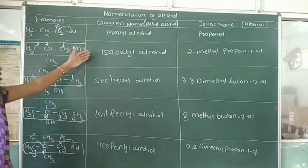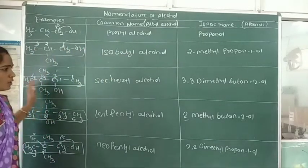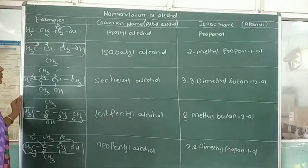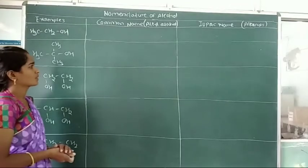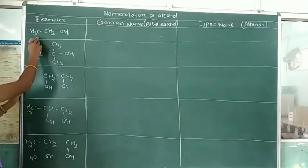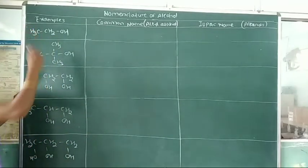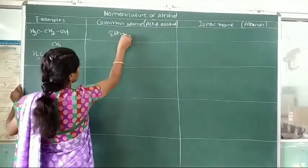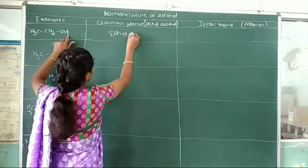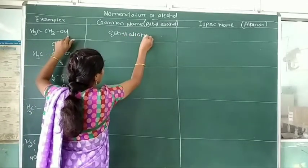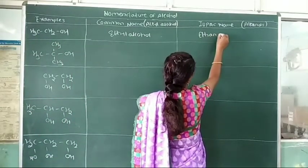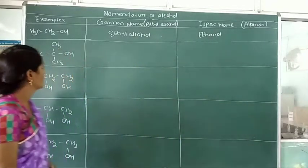Understand everyone — how to get the common name and IUPAC name of these compounds? Write down these examples in your notebook. Then we see more examples. First: CH3-CH2OH. This is a very simple example. In the common system, the name is ethyl alcohol — only 2 carbon atoms with an ethyl group attached to the hydroxy group. In the IUPAC system, the parent alkane is ethane, and replacing 'E' with 'OL' gives ethan-ol.